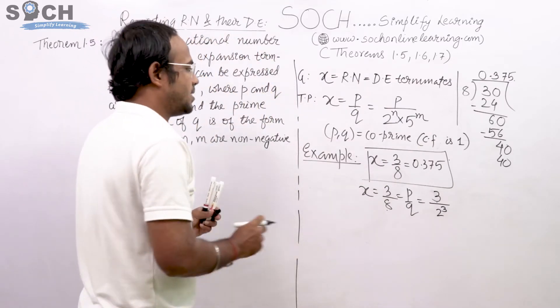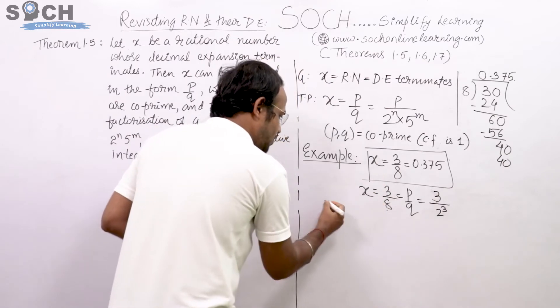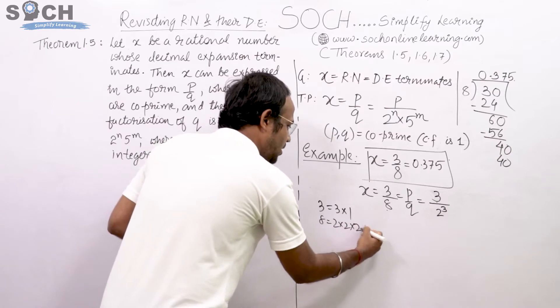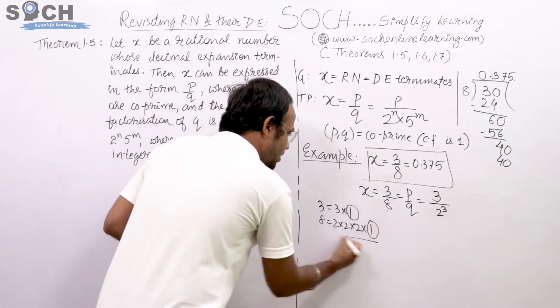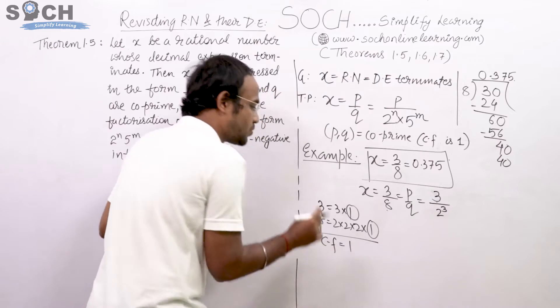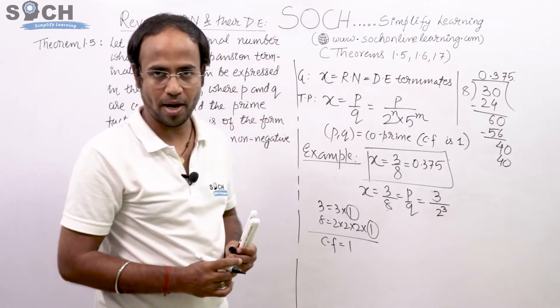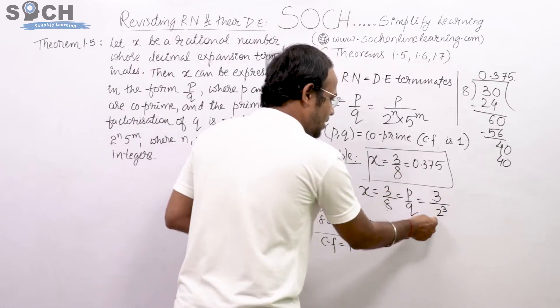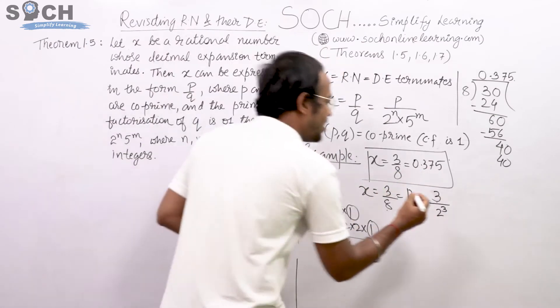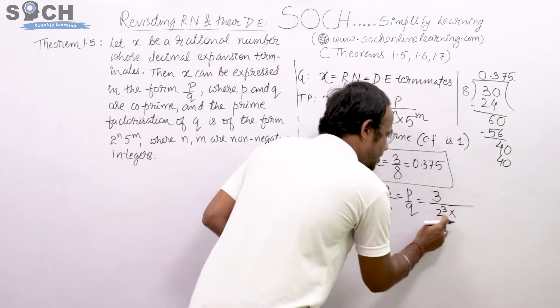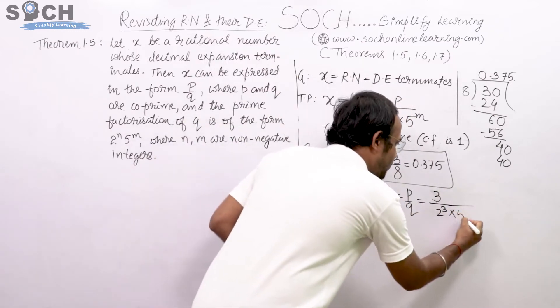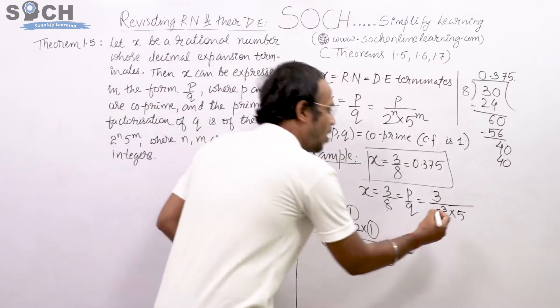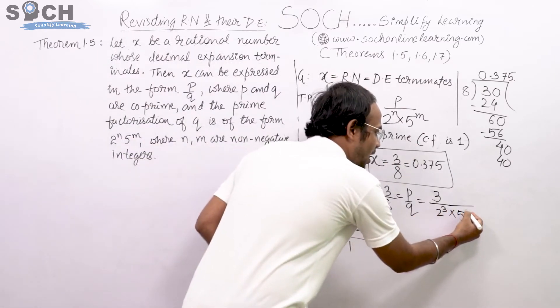Because 8 is 2 into 2 into 2. Now, 3 and 8 are co-primes because 3 is 3 into 1 and 8 is 2 into 2 into 2 into 1. Both have common factor as 1, strictly 1, and therefore they are co-primes.